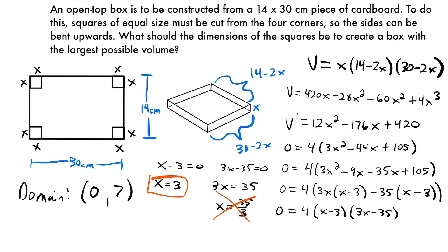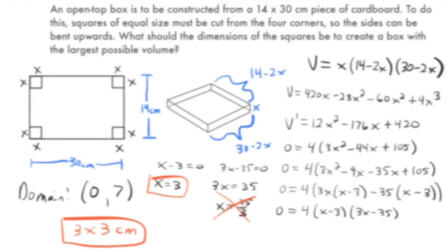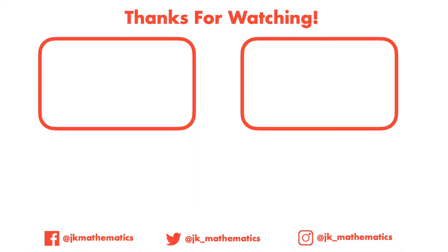The dimensions of our squares should be 3 by 3 centimeters. Using those dimensions for the squares cut from each corner of the cardboard maximizes the volume of the resulting box. That is the end of this optimization problem — check out the channel for more calculus lessons.